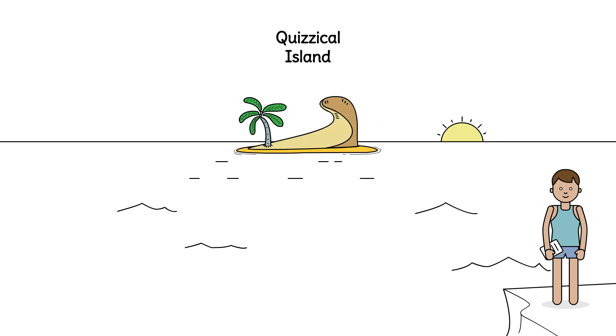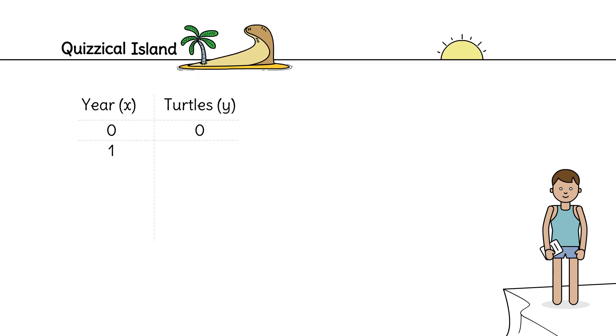This year, let's call it Turtle Year Zero, there are no turtles on the island. But he returns in one year and discovers exactly one turtle. In two years there are four, and in three there are nine.